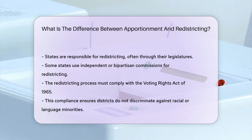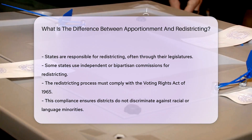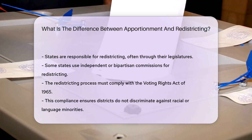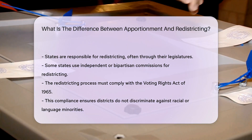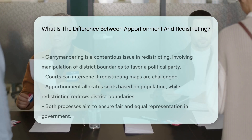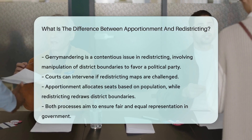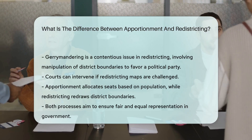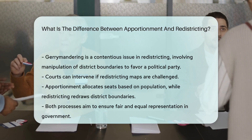Redistricting can be contentious due to gerrymandering. Gerrymandering is the manipulation of district boundaries to favor a political party. Courts can intervene if redistricting maps are challenged.